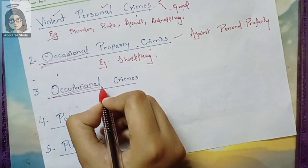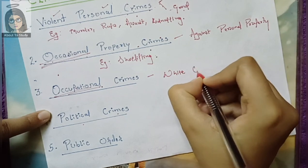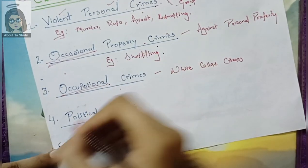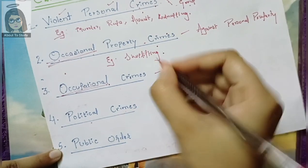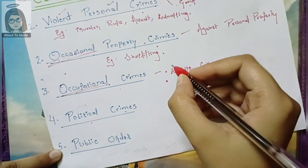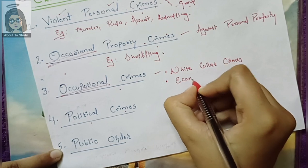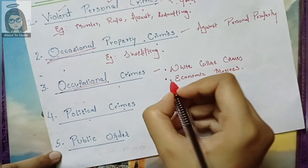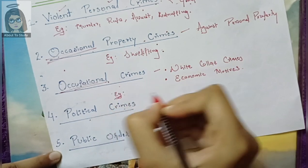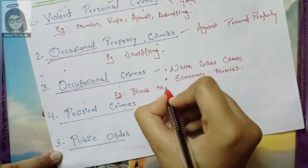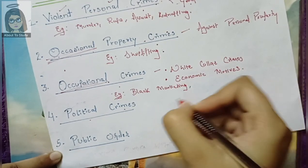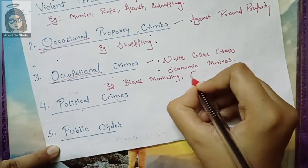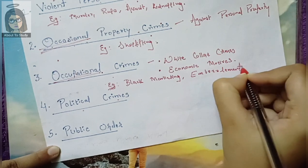Occupational crime means crime committed through your occupation or job. This is also known as white collar crime — a non-violent type of crime. Occupational crime is committed by a person using their occupation for economic motives — to get more money beyond their salary or pension. Examples include black marketing and embezzlement. Mostly high-profile people are involved in it.